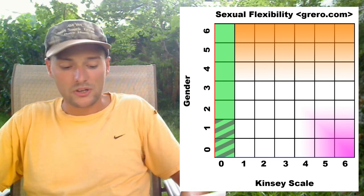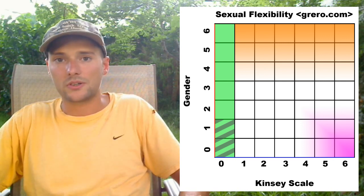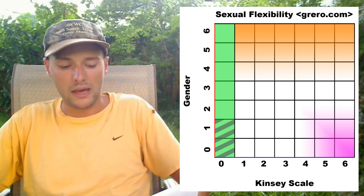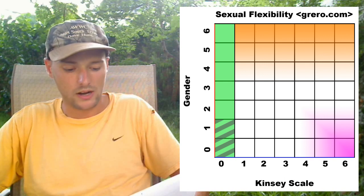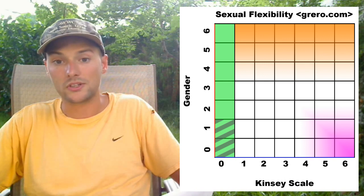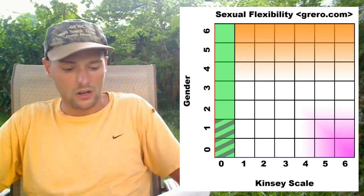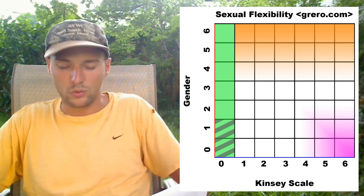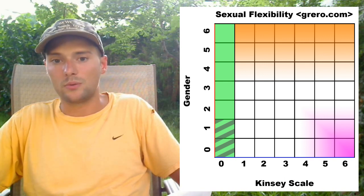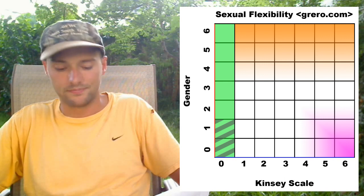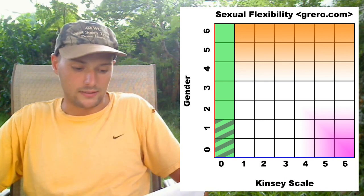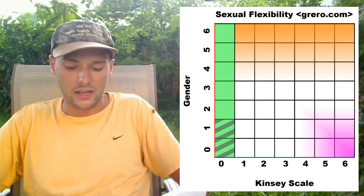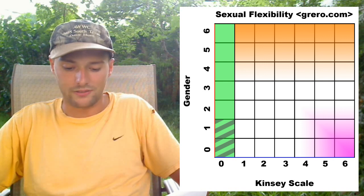So anyways, you have the Kinsey scale. It's from 0 to 6. If you're a male and you only like females, you would be a 0. If you only like males, you would be a 6. And if you like men and women, you'd be anywhere from 1 to 5.